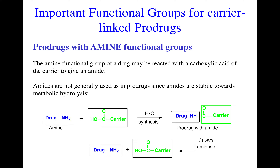These are important groups for carrier-linked prodrugs, not bioprecursor prodrugs. We looked at the alcohols and the carboxylic acids and the ways in which we can use them to develop esters to make prodrugs that can be released inside the body. We know that there are a number of advantages of using ester-type prodrugs, as discussed in the previous lecture.